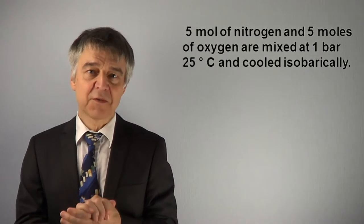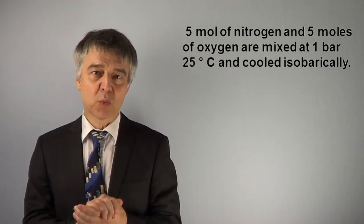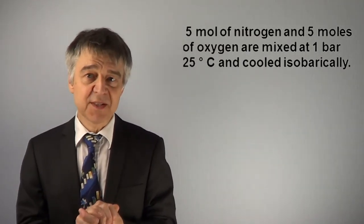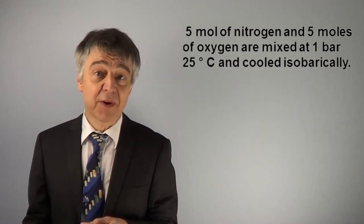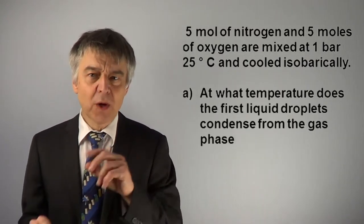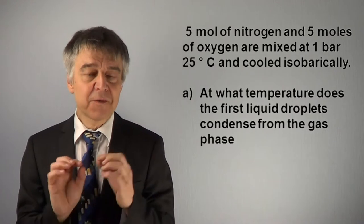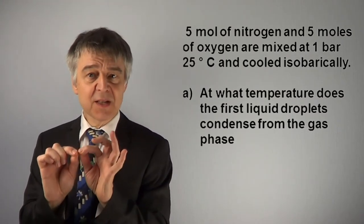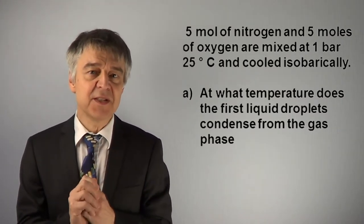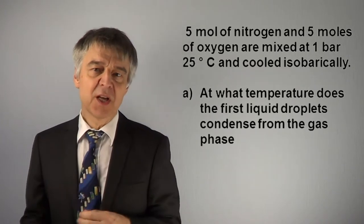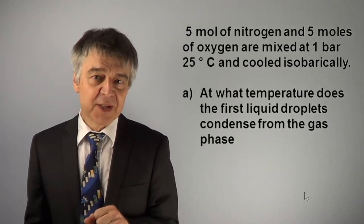5 moles of nitrogen and 5 moles of oxygen are mixed at 1 bar and 25 degrees Celsius and cooled isobarically. At what temperature does the first liquid droplet condense from the gas phase, and what composition does this droplet have?